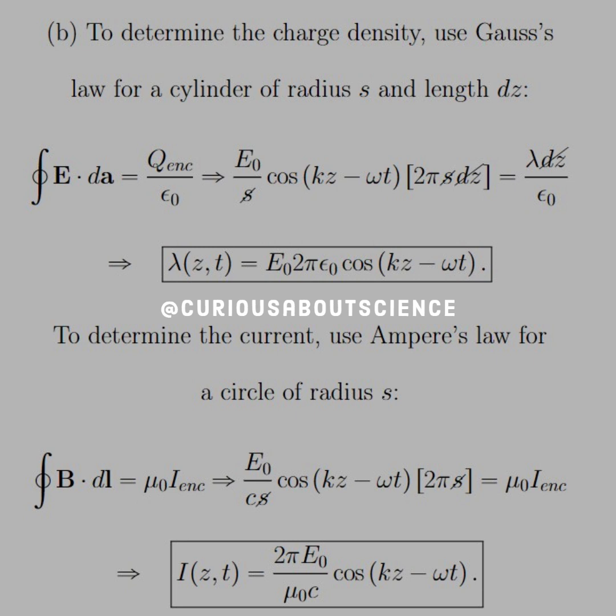And, if we solve for lambda, we get lambda Z of T is equal to E naught 2 pi epsilon naught cosine KZ minus omega T. Okay, good to go.